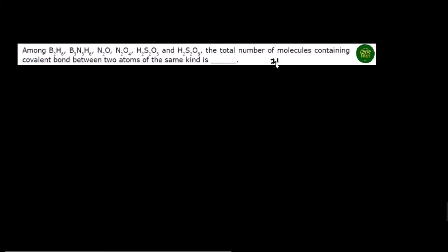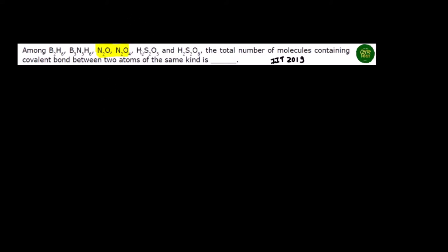This question is from IIT 2019 Advanced Paper 1, from the chemical bonding chapter. It has different stuff like nitrogen, boron, carbon family. After you get all the information, finally you have a question designed.